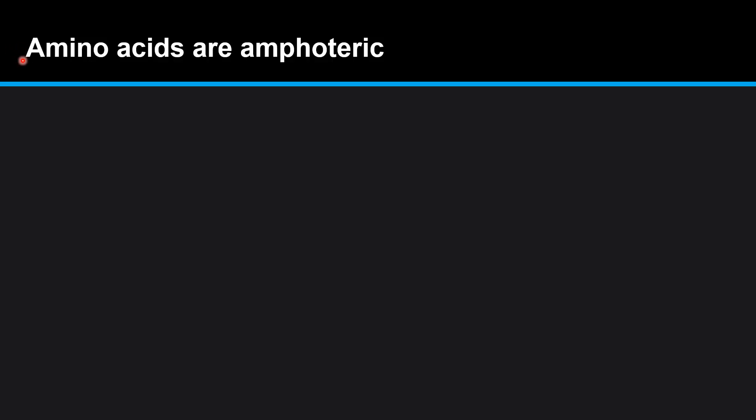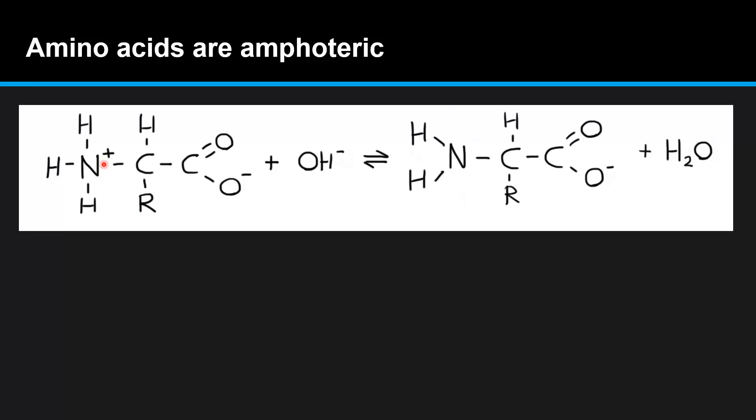Amino acids are amphoteric. That means they can act as acids or bases. In this top example here we have the amino acid and it is donating one of these hydrogen ions to this OH negative ion. Therefore the amino acid is acting as a Bronsted-Lowry acid and the OH negative is the Bronsted-Lowry base.